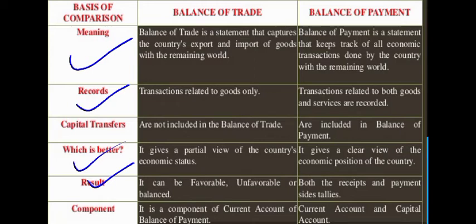On the other hand, balance of payment can be divided into two sides: first, receipts, and second, payments. Balance of payment is always balanced — its balance is always zero, meaning the receipt and payment sides are always equal.